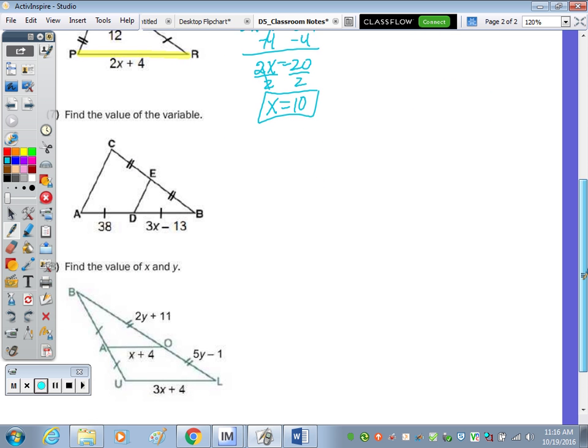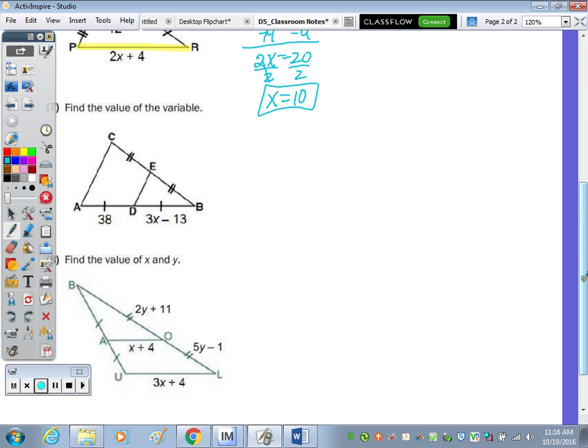We're not given a midsegment in 7, we're given AD and BD, without even being told that we had a midsegment, I know this is a midpoint because of these dashed lines right there. So, without knowing anything else in the picture, I already know those are equal because of those marks. So, 38 is equal to 3X minus 13, so add the 13, 51, divide it by 3, and X is equal to 17.